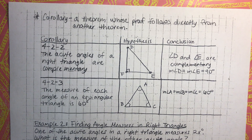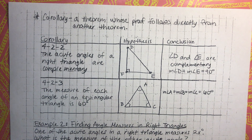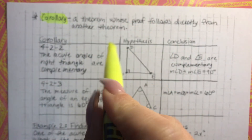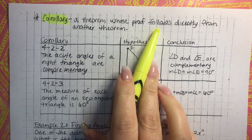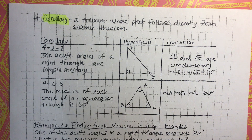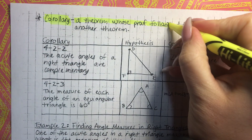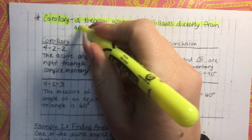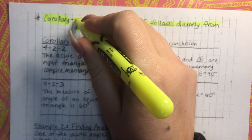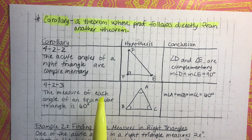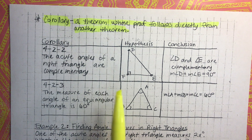Alright, we're back for the next example, but before we get started, let's go ahead and talk about a couple corollaries. A corollary is a theorem whose proof follows directly from another theorem. We're going to look at two corollaries here that are related to other theorems.